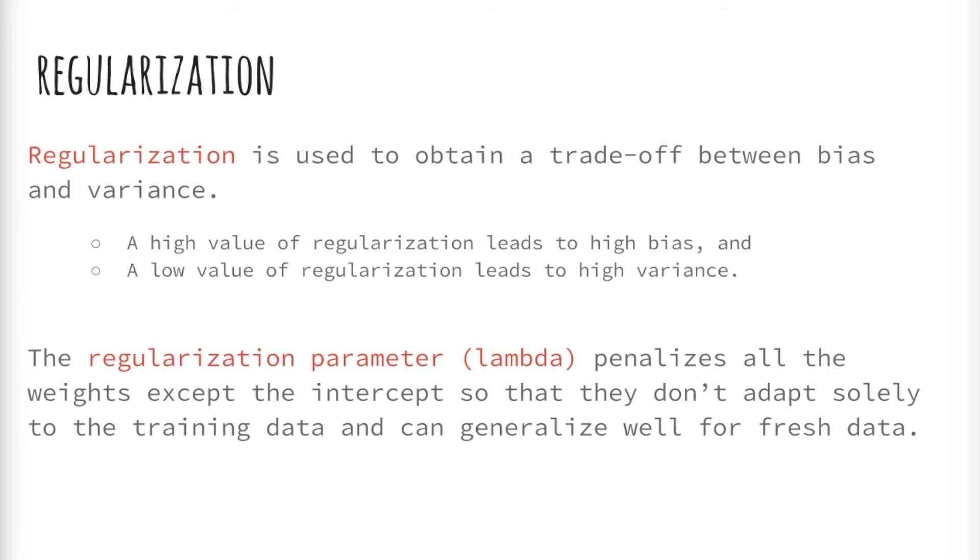To address the tradeoffs between bias and variance, we use regularization. Our current algorithm is focused on minimizing the cost function, and that's all. However, by placing complete emphasis on error and not on model suitability, we are essentially encouraging overfitting.